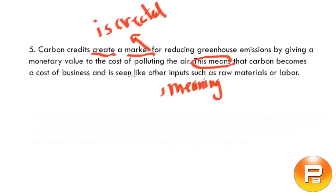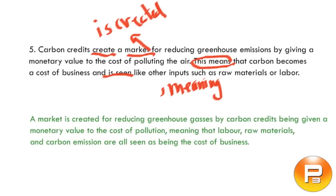I'm going to change those two. Take a look at this one — this is already passive, but I'm going to keep it, because if we try to put that into the active voice we're actually not sure who's doing the action of seeing, so we're just going to leave it as it is. So it looks a little bit like this: 'A market is created for reducing greenhouse gases by carbon credits being given a monetary value to the cost of pollution, meaning that labor, raw materials, and carbon emissions are all seen as being the cost of business.'